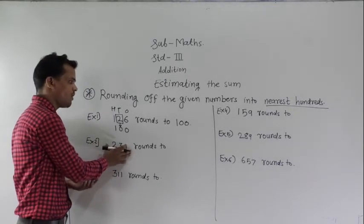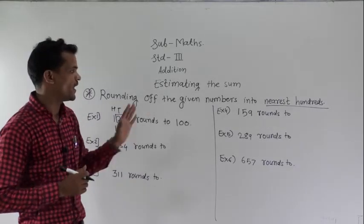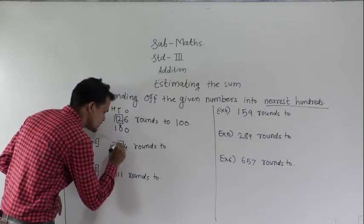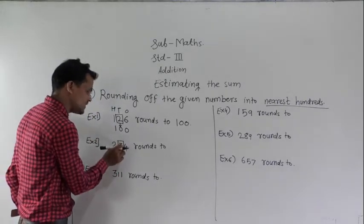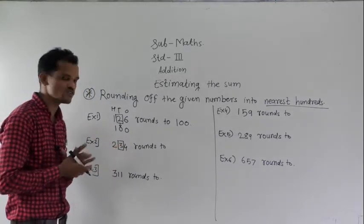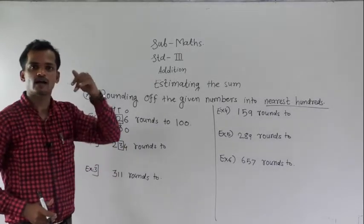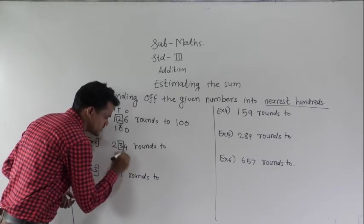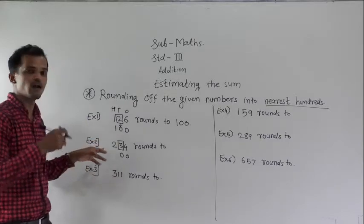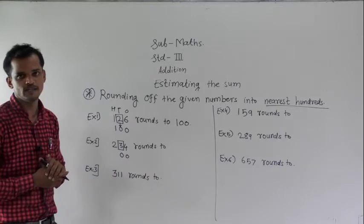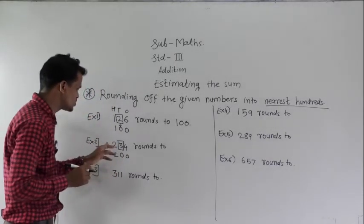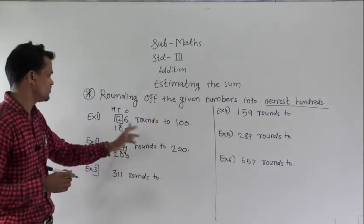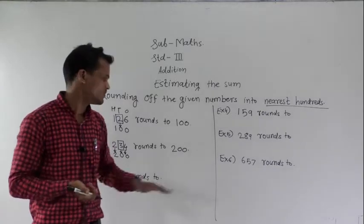For 234, the tens place digit is 3. That 3 is smaller than 5, so this number will be rounded down. Write 0 under the 3 and 0 at the ones place. While rounding down, do not change the hundreds place digit. So 234 rounds to 200.